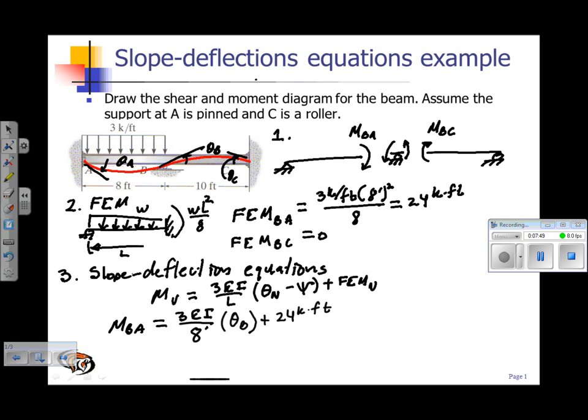Now I have to write down the equation from B to C, and that's going to be 3EI. The length in this case is 10 feet, and my rotation is theta B. Once again, I have no chord rotation for that side and I also have no fixed-end moment.